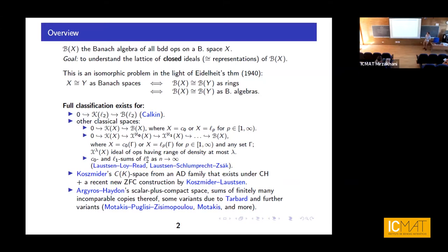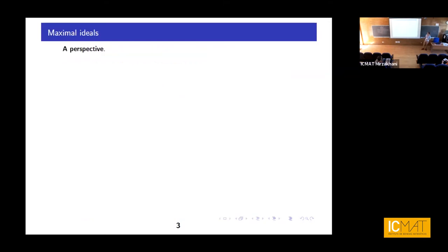In most of these cases, we have a situation where the lattice of ideals has a unique maximal ideal. This need not always be the case — a simple example such as LP plus LQ, where the spaces are incompatible, gives two maximal ideals corresponding to the summands. With Niels we have an example built out of an Argyros-type space plus a suitably chosen subspace where this lattice has precisely six elements.